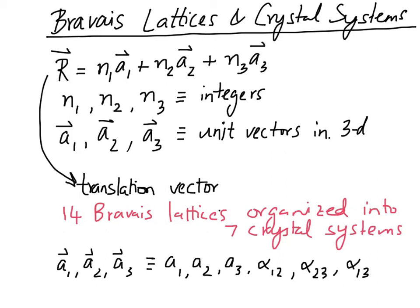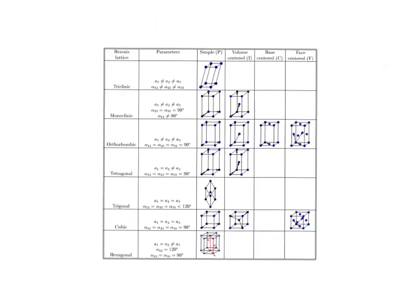With these definitions in place, we are going to look at the 14 Bravais lattices and seven crystal systems and see how these six numbers — the three alphas and the three A's — vary with respect to the choice of crystal system. The most general and least symmetric of the seven crystal systems is the one called triclinic, listed at the very top. The triclinic system is defined as the crystal system where the magnitudes of the three unit vectors A1, A2, and A3 are not equal to each other, and the three angles are also not equal to each other.